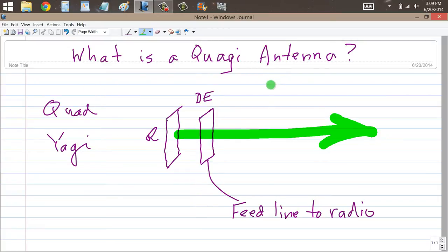A Quaggy antenna is a quad antenna like this, with a driven element and a reflector, and the directors, rather than being loops as they would be in a multi-element quad, are instead Yagi type directors, like this. D1, D2, D3.